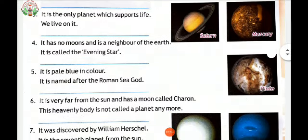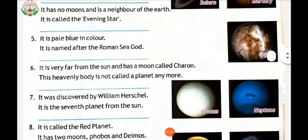It is very far from the sun and has a moon called Charon. This heavenly body is not called a planet anymore. It's Pluto. It was discovered by William Herschel. It is the seventh planet from the sun. It's Uranus.